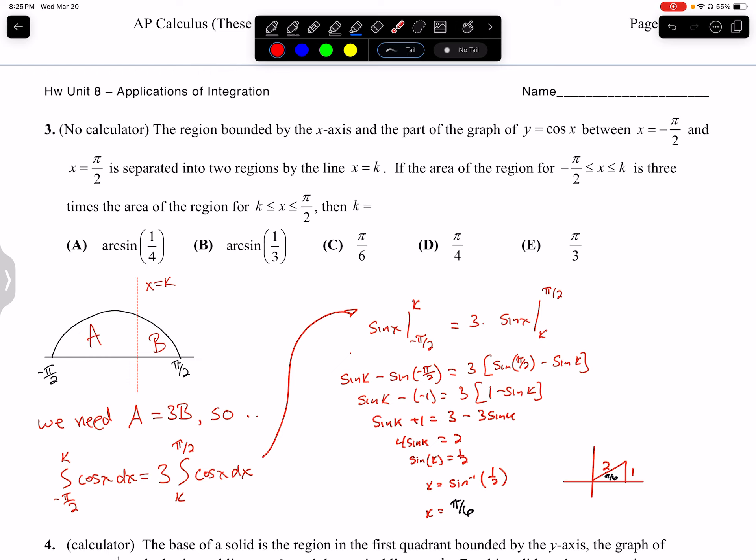So it says the region bounded by the x-axis, that's here, and part of the graph of y equals cosine, that's this part here, between negative pi over 2 and pi over 2, these are two regions by the line x equals k. So x equals k right here. We have no idea where this is. x equals k is a vertical line. If the area of the region to the left of k, that's what this is saying, so this part here, we're going to call that region A, is three times the area of the region to the right. So we need whatever A is. To make it equal to B, we have to triple B. So A is three times B.